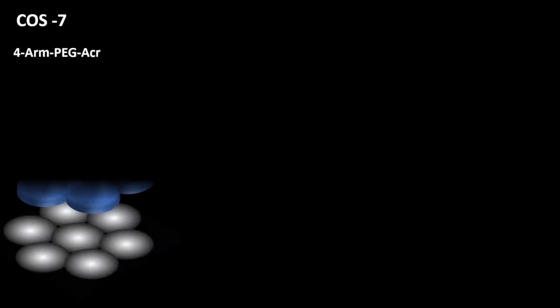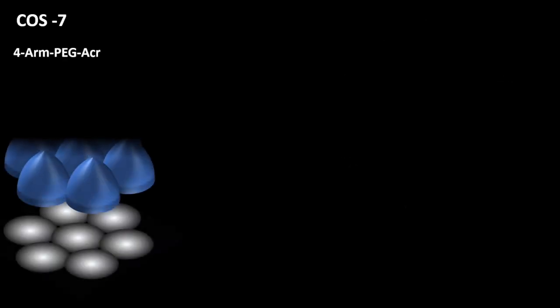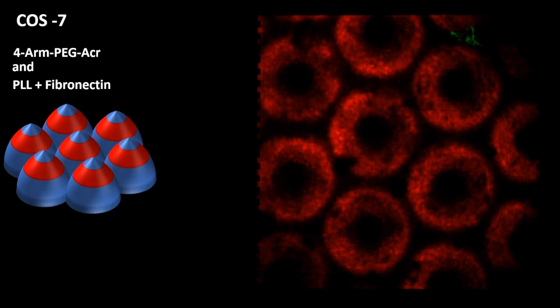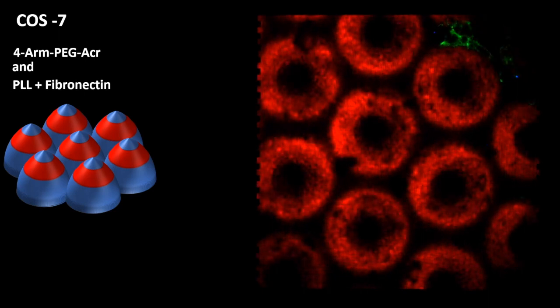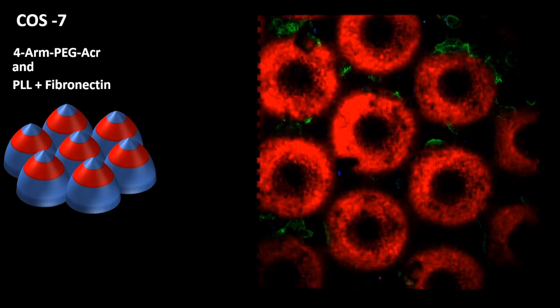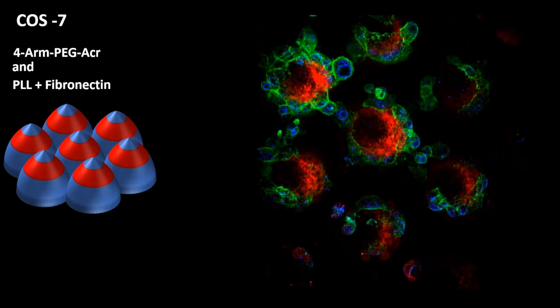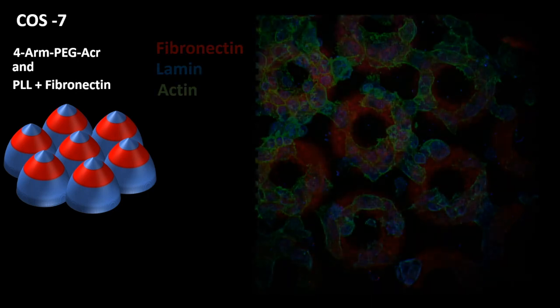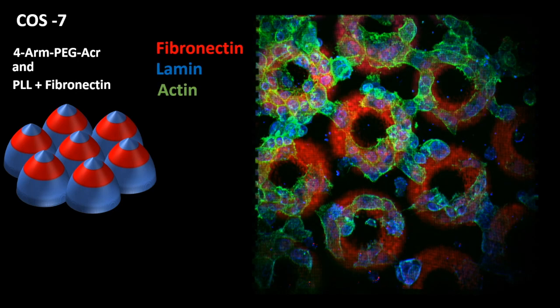Using the same workflow, we created PEG hydrogel in the shape of doughnuts, with circular adhesive patterns. Cos7 cells were cultivated on the substrate and grew according to the biochemical and topographical cues, as you can see on the left panel.